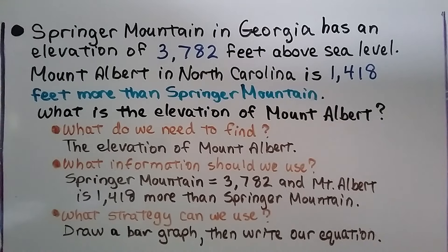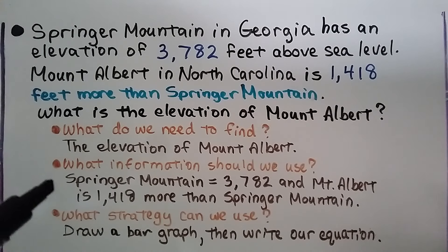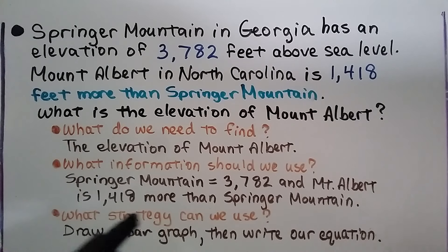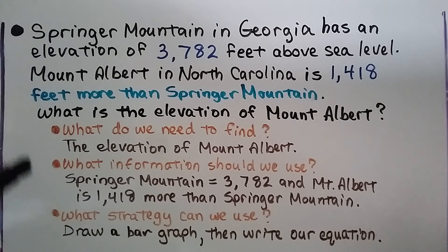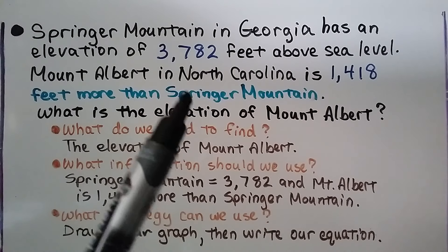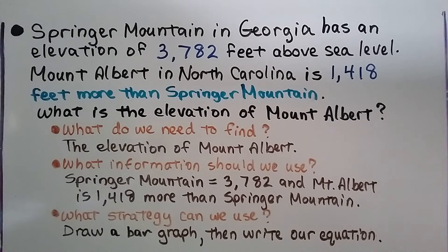Springer Mountain in Georgia has an elevation of 3,782 feet above sea level. Mount Albert in North Carolina is 1,418 feet more than Springer Mountain. What is the elevation of Mount Albert? We need to find the elevation of Mount Albert. The information we use: Springer Mountain is 3,782 feet, and Mount Albert is 1,418 feet more than Springer Mountain. We can draw a bar graph and write our equation. Since it says 'feet more than,' we know it's going to be addition — that's our clue.